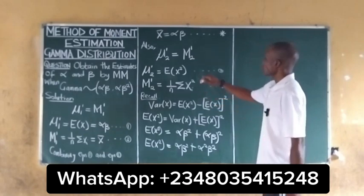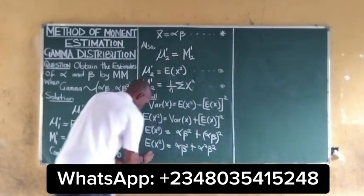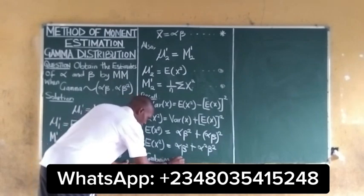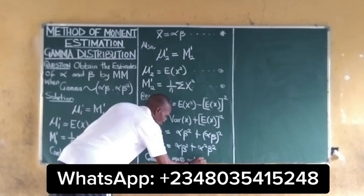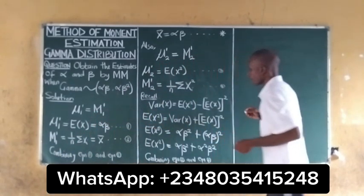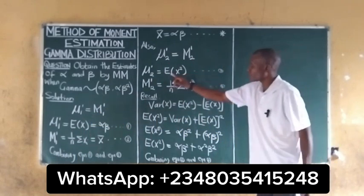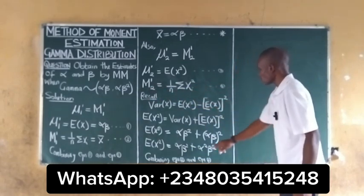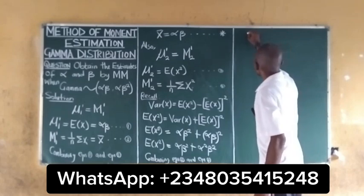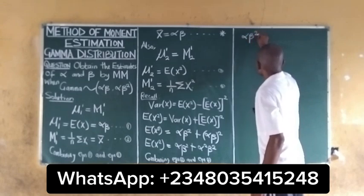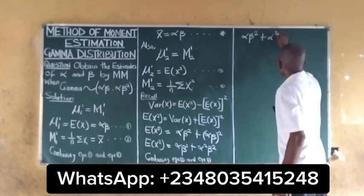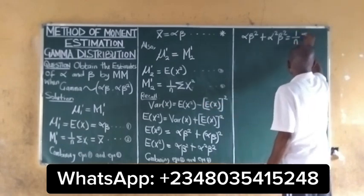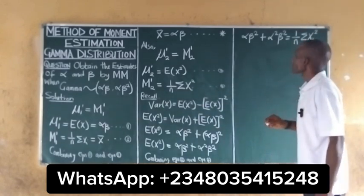Combining equation 3 and equation 4, we equate the population second moment to the sample second moment. We get alpha·beta² plus alpha²·beta² equals (1/n) times the summation of x_i squared.